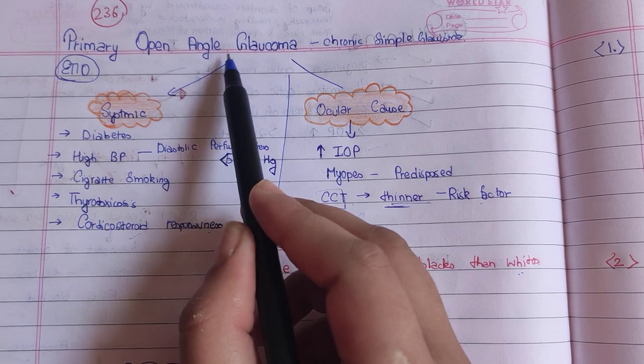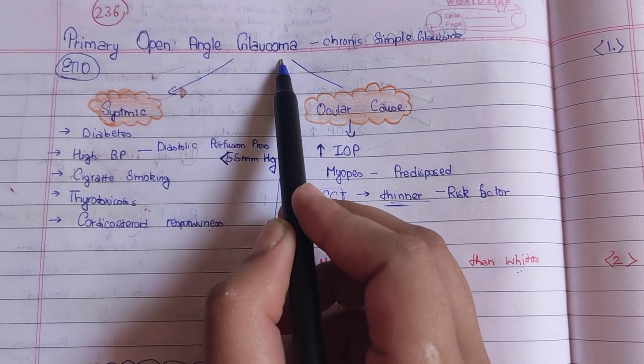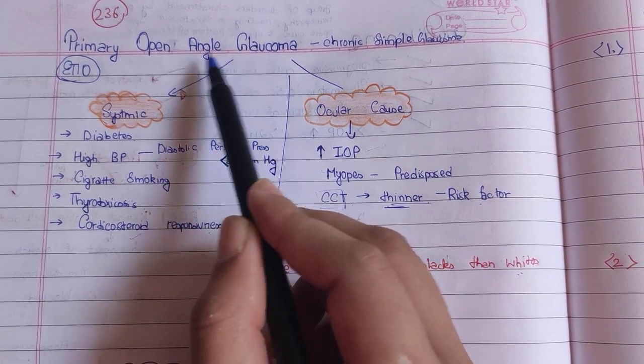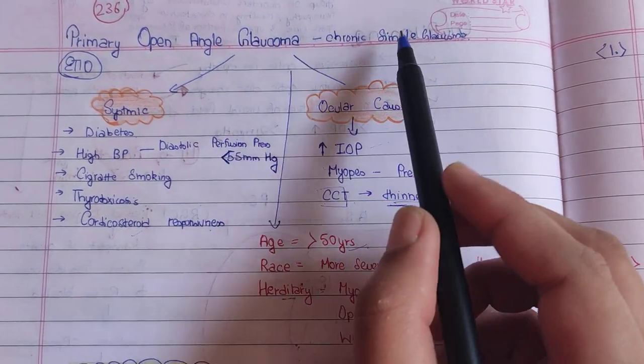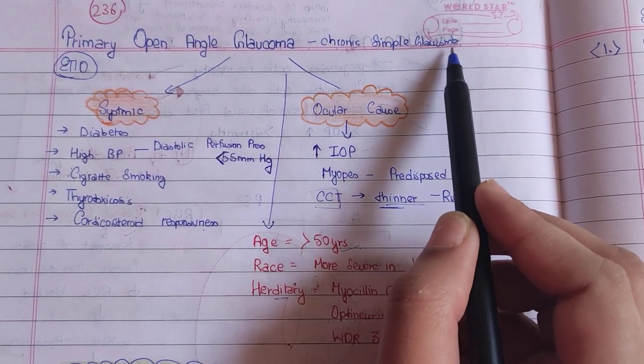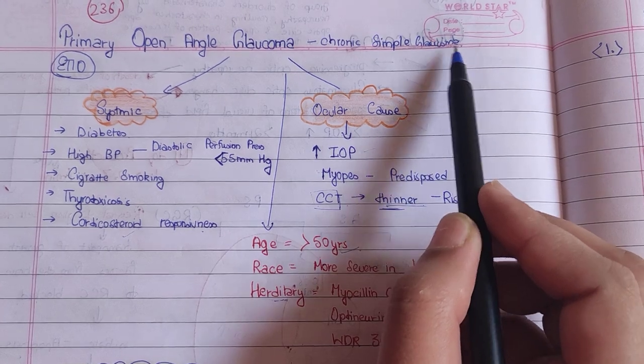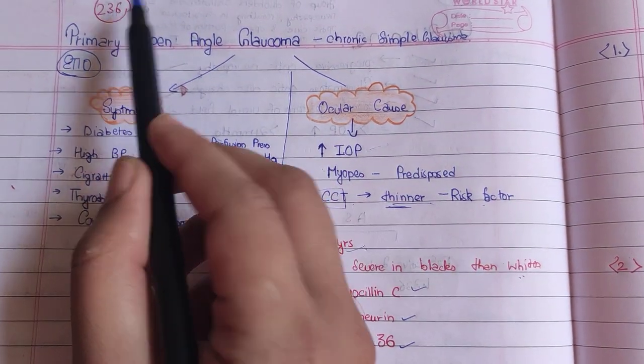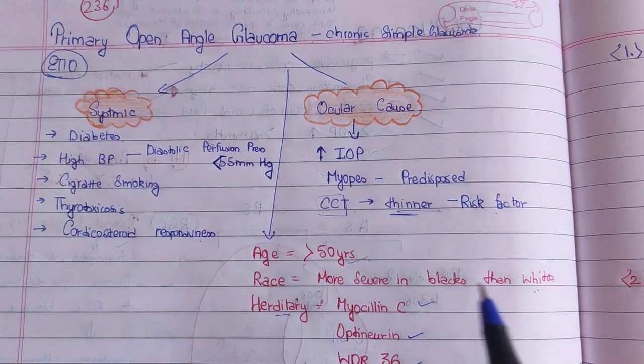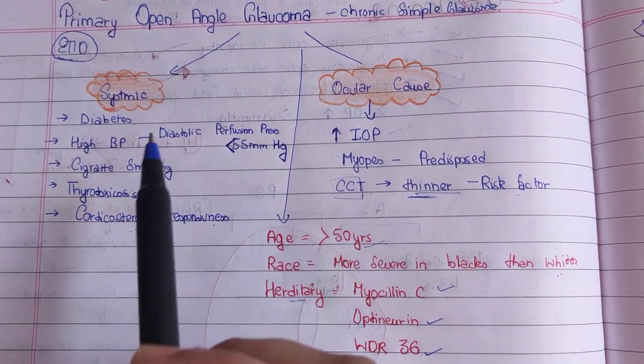Let us talk about primary open angle glaucoma. Primary open angle glaucoma is also called chronic simple glaucoma. It is covered on page number 236 of A.K. Khurana.